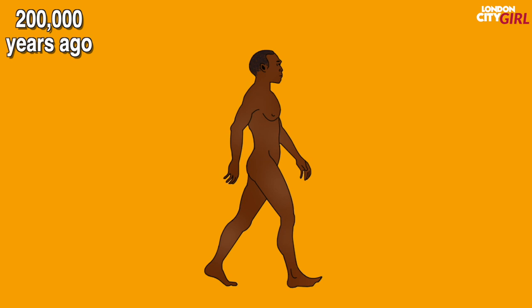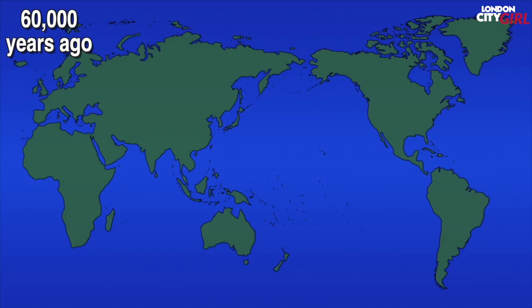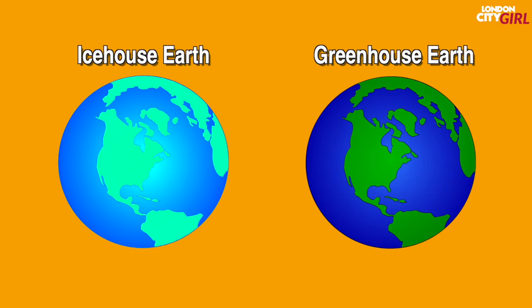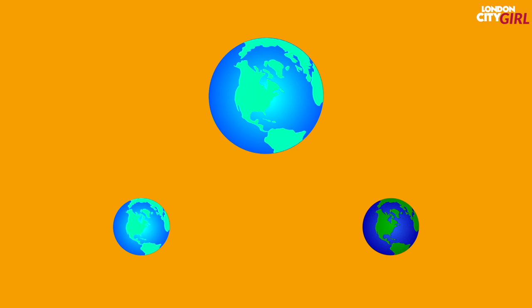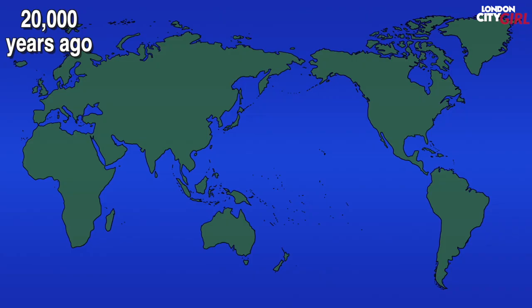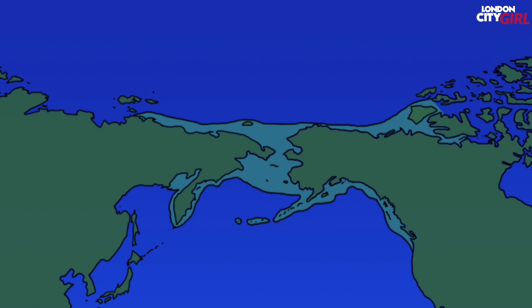200 thousand years ago anatomically modern humans emerged. Around 70 thousand years ago behaviourally modern humans emerged. Human evolution had developed brains capable of abstract and symbolic thinking. 60 thousand years ago modern humans left Africa and spread across the globe. The Earth's climate alternates between ice ages and greenhouse periods. Within ice ages there are periods of colder climate known as glacial periods and warmer ones known as interglacial periods. We are currently in an interglacial period.